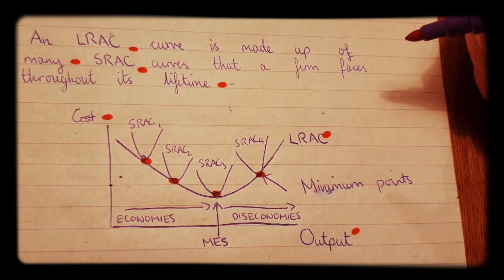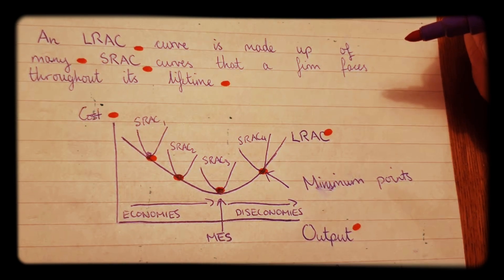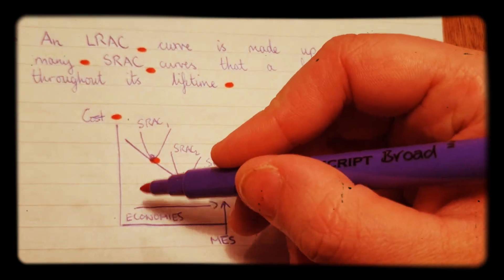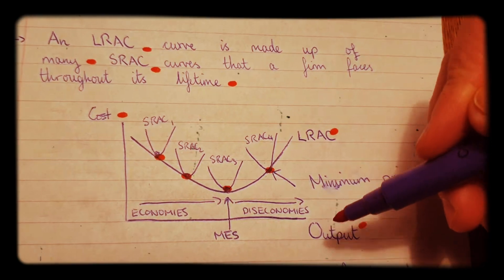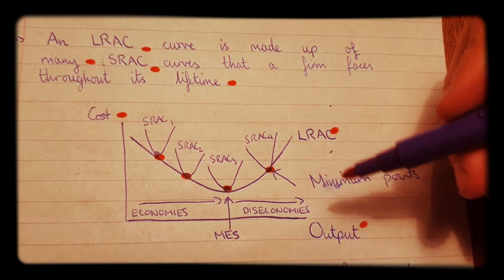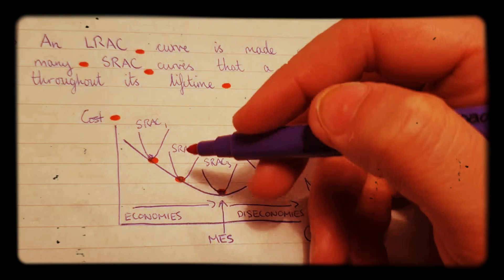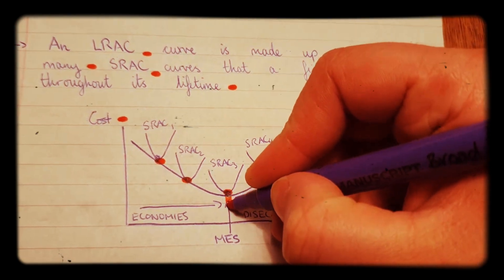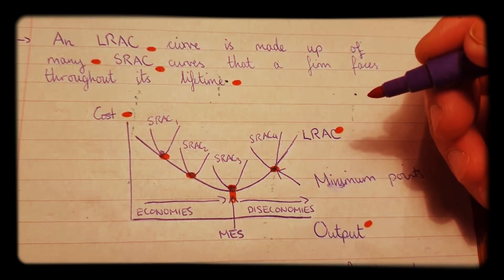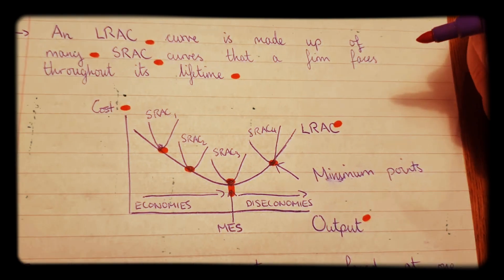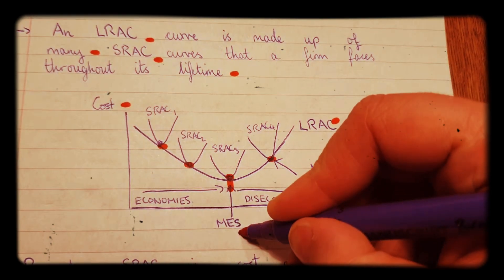Okay, so that's what it is. Now when the firm grows in size and the long run average cost falls, this is called economies of scale up until this point here. At that point there, we reach the minimum efficient scale.